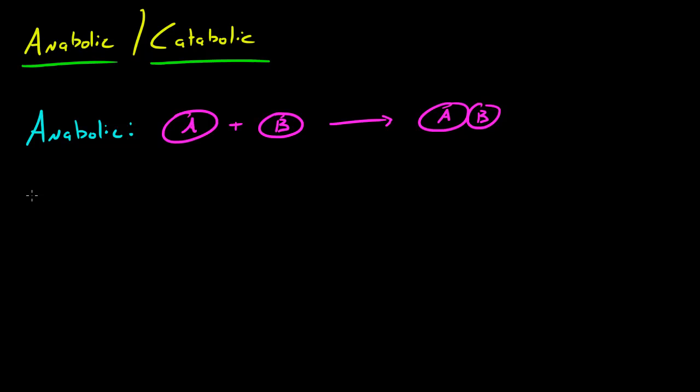Now of course you can kind of see where this is going. Let's go ahead and talk about catabolic chemical reaction. A catabolic chemical reaction is when you have a larger molecule such as AB and after the chemical reaction you end up with two or more smaller molecules, we'll say in this instance it's A and B.